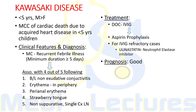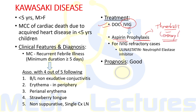The drug of choice for Kawasaki Disease is intravenous immunoglobulin (IVIG), followed by aspirin prophylaxis. Aspirin prophylaxis is required to prevent thrombosis of coronary aneurysms, which is common in untreated patients. If the patient is refractory to IVIG, a newer drug — a neutrophil elastase inhibitor called Ulinastatin — has been developed. Prognosis is good with excellent response to IVIG.